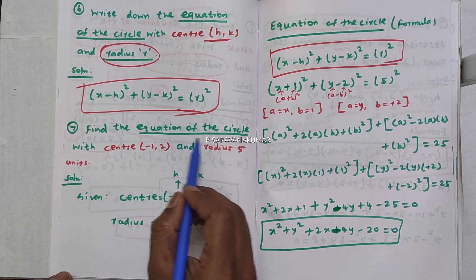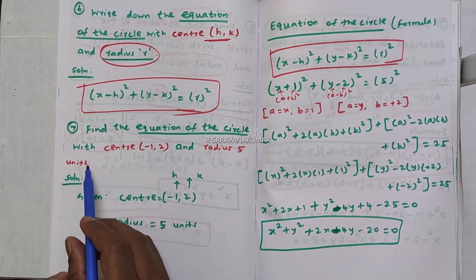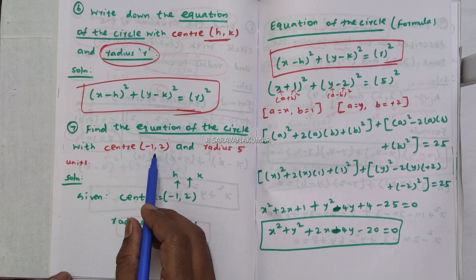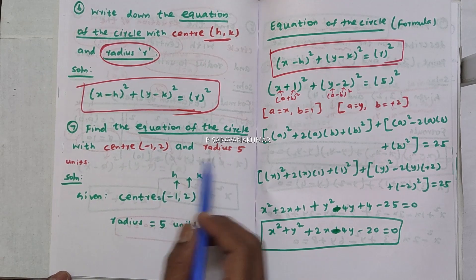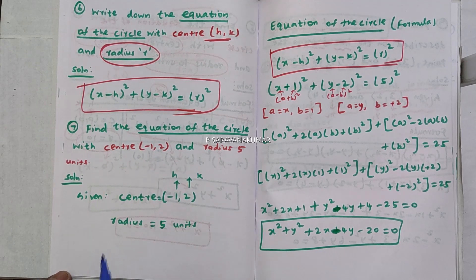Find the equation of the circle with center (-1, 2) and radius 5 units.